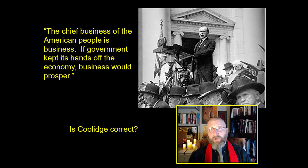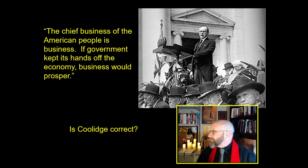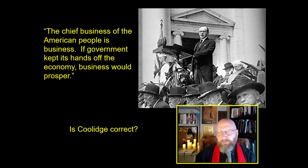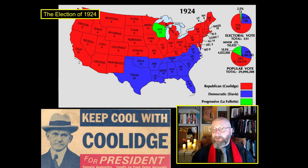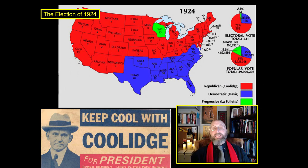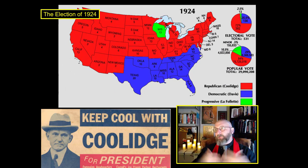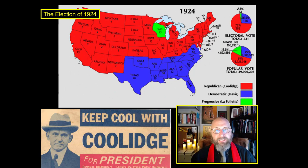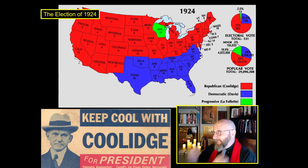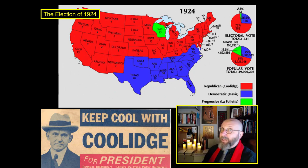Coolidge's very famous quote: 'The chief business of the American people is business. If government kept its hands off the economy, business would prosper.' Is he correct? Is the business of the American people business? At any rate, Calvin Coolidge was incredibly popular — especially for a man who didn't like to talk. In 1924, he was overwhelmingly re-elected, winning 54% of the popular vote. Calvin Coolidge couldn't even smile in his own re-election stickers.